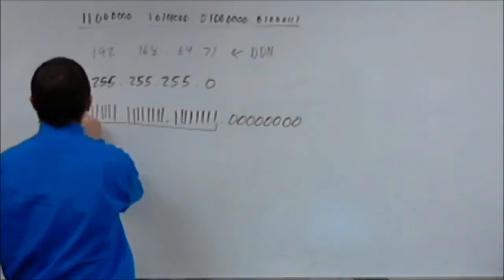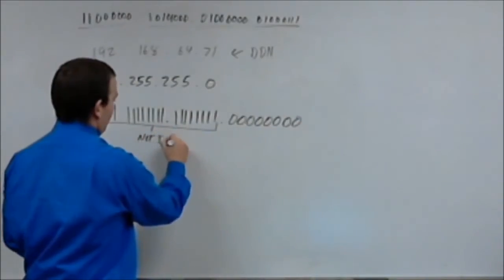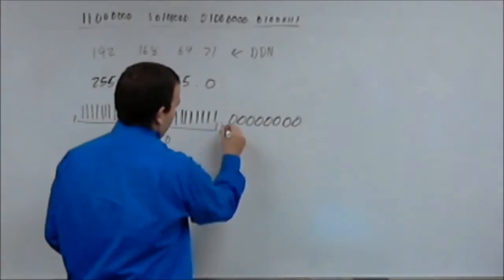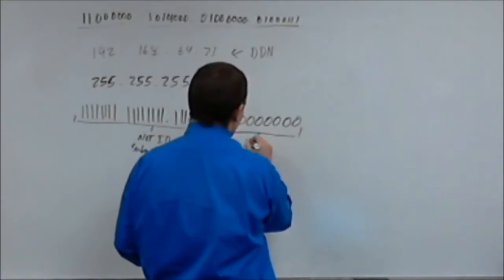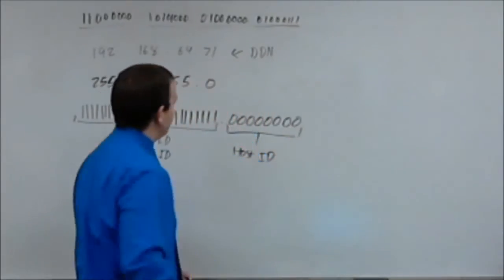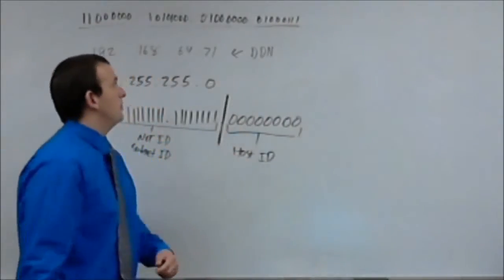And these ones represent a network ID or a subnet ID. These zeros together here represent a host ID. Now, as you can see, there's a pretty solid line drawn in between that.